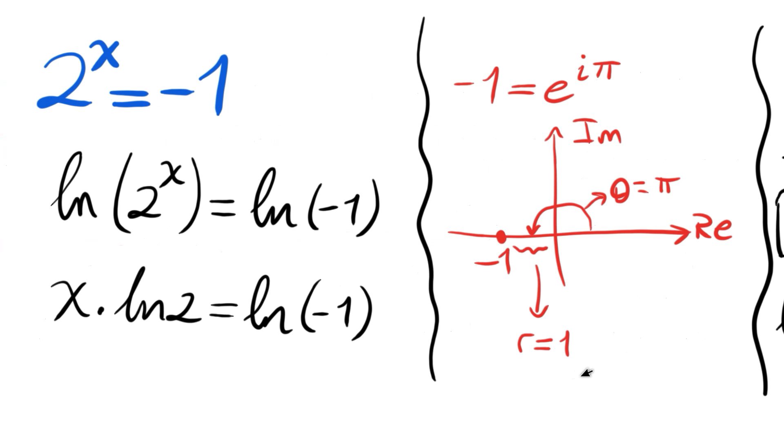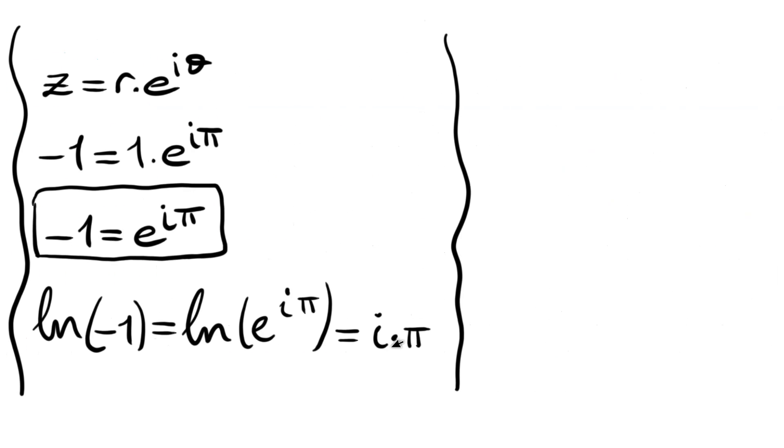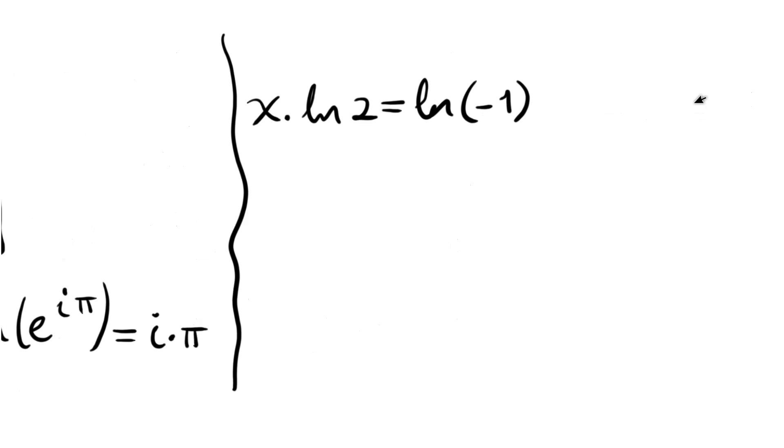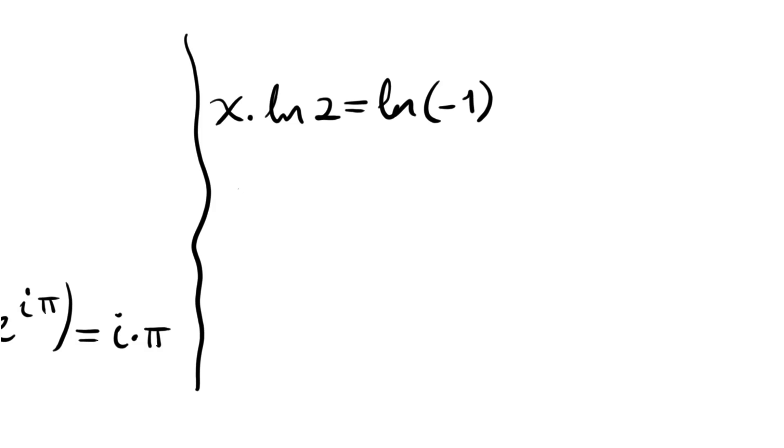We have x times ln 2 is equal to ln(-1). X times ln 2 is equal to... ln(-1), sorry. So x times ln 2 becomes iπ as we found.